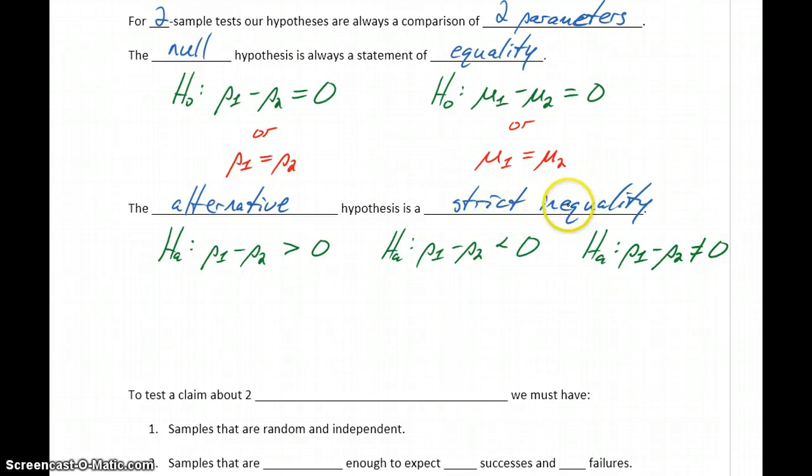So always a strict inequality, always a statement that the difference between our two parameters is somehow different than what we stated in the null hypothesis. And again, with a little bit of rewriting here, this is really saying what we're concluding if we end up with our alternative hypothesis,